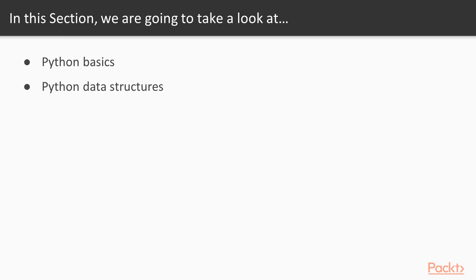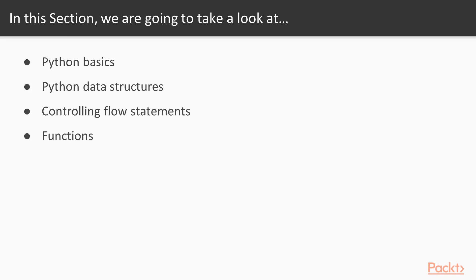After that, we will spend some time on understanding the control flow statements, namely the if statements and the different types of loops. Then we will be spending some time on understanding how we can construct functions and how these are different from constructing functions in other programming languages. Finally, we will look at a special type of method called list comprehension and some related use cases.